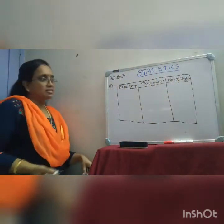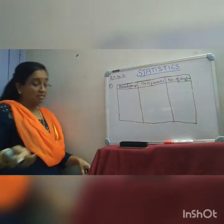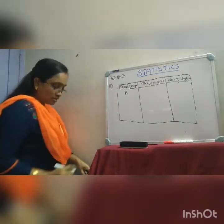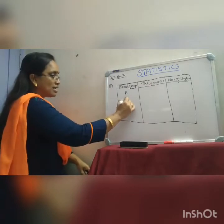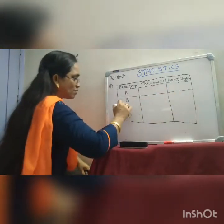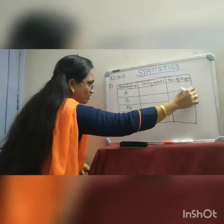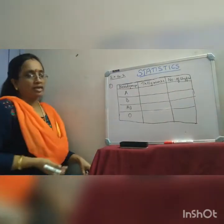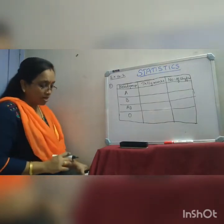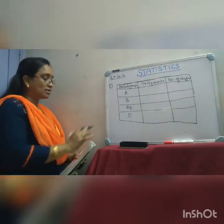Then you are going to make this table. First step: identify what the blood groups are. They are given — A, B, O, and AB — four types of blood groups. So you draw the table with four rows, one for each group. Then you have to put tally marks — don't count and write directly; you have to go through each entry and draw the tally mark for the corresponding group.